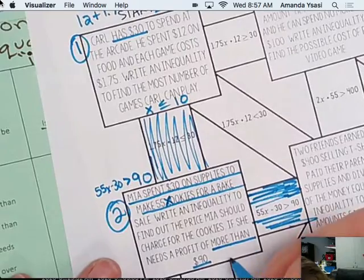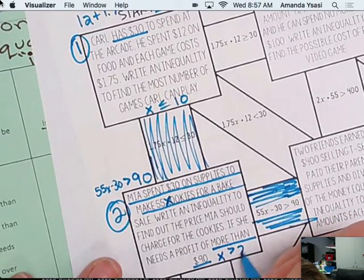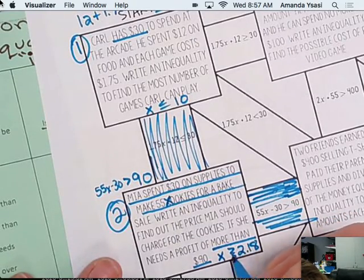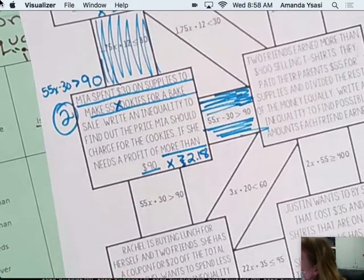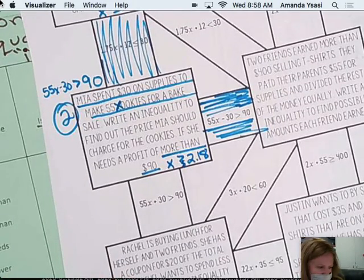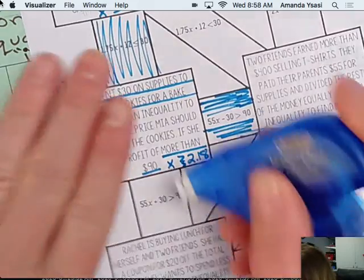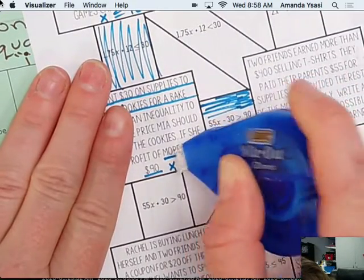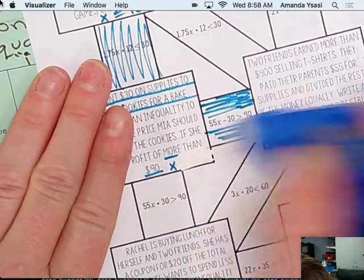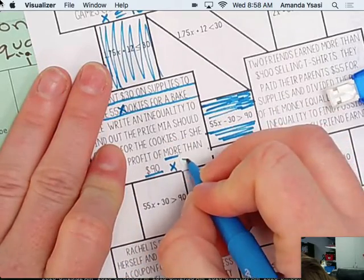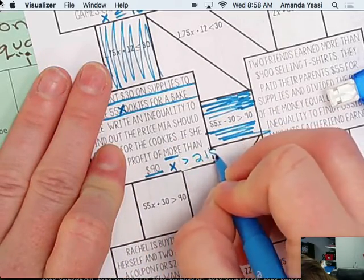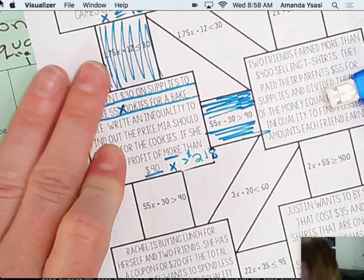All right, we're going to write it here. X greater than $2.18. Oh, that's hard to see. I need to fix that real quick. There we go. A little better.